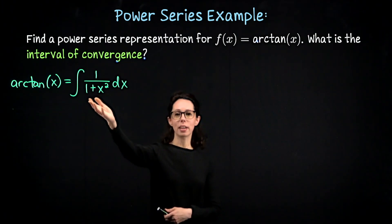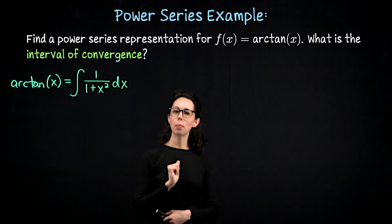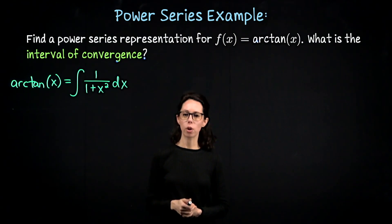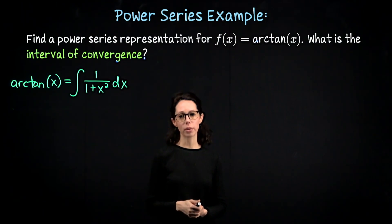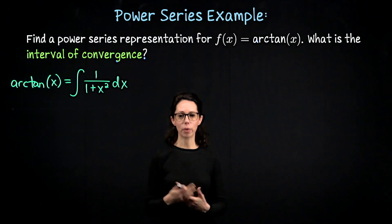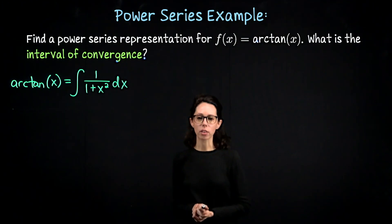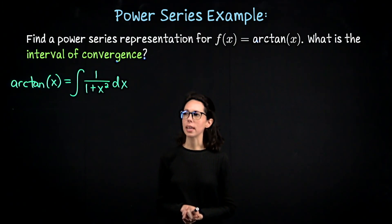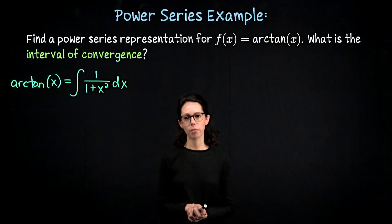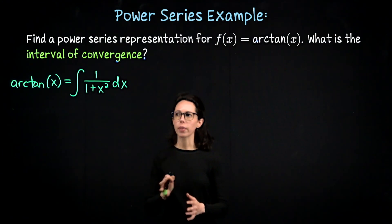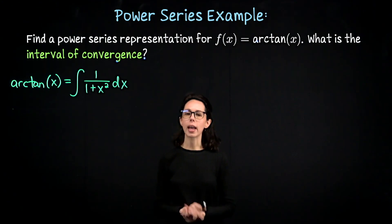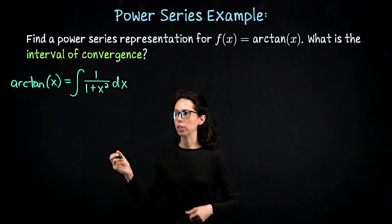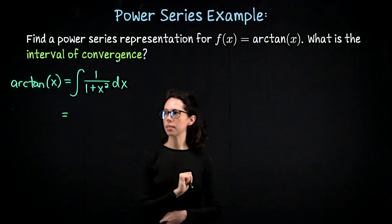This is a nice integrand. 1 over 1 plus x squared looks like that prototype function 1 over 1 minus x, whose power series representation we already know. That's the power series that looks like the sum of x to the n. So what we can do is take this expression 1 over 1 plus x squared, rearrange terms and rewrite it so that we can bring in that geometric-looking power series.